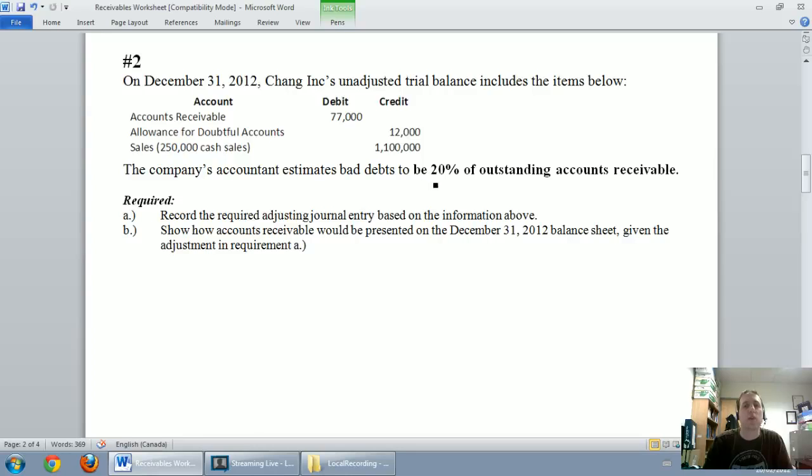So rather than taking a percentage of sales, we look at taking a percentage of receivables. Now, this is kind of a simple example. More often, you'll get an aging of receivables list, and you'll look at your freshest receivables you'll collect most of, and your older receivables, more of them will become bad debts. But whenever we estimate bad debts based on a percentage of our accounts receivable, we are doing the balance sheet method.